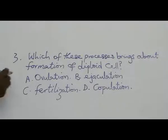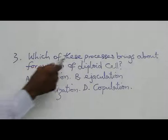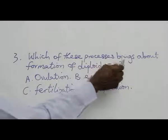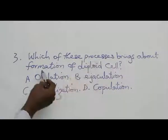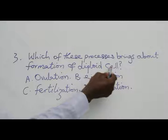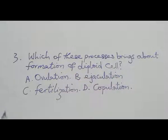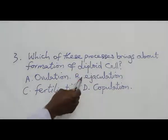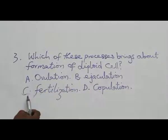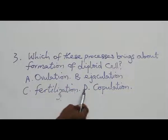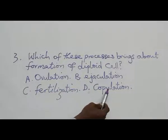Question 3: Which of these processes brings about formation of diploid cells? A: Ovulation. B: Ejaculation. C: Fertilization. D: Copulation.